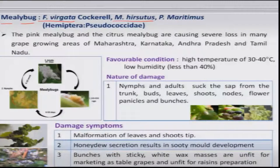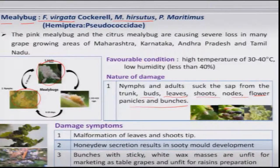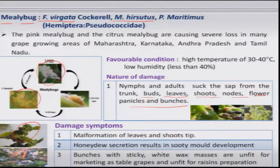Both the adults and the nymphs are the damaging stages, and they are found congregating on the leaves, buds, shoots, nodes, flowers, and on the bunches as well. If they continuously suck the sap from the leaves, such leaves will develop crinkling and curling symptoms and ultimately dry and wither off.